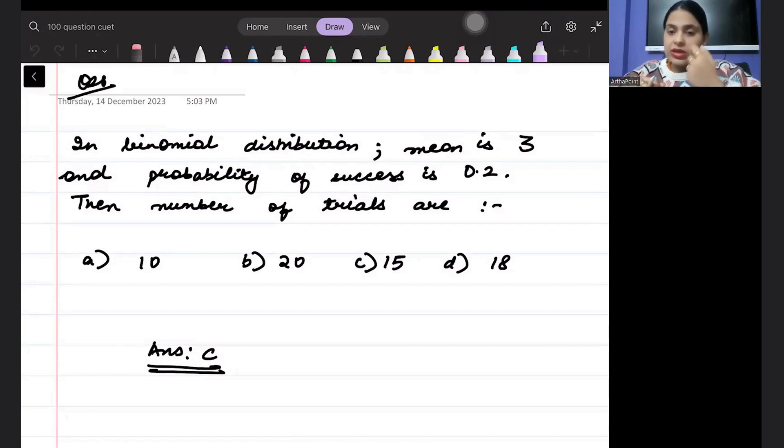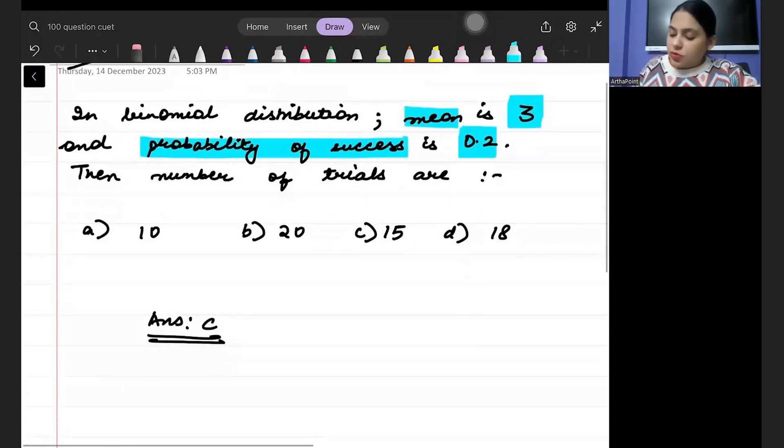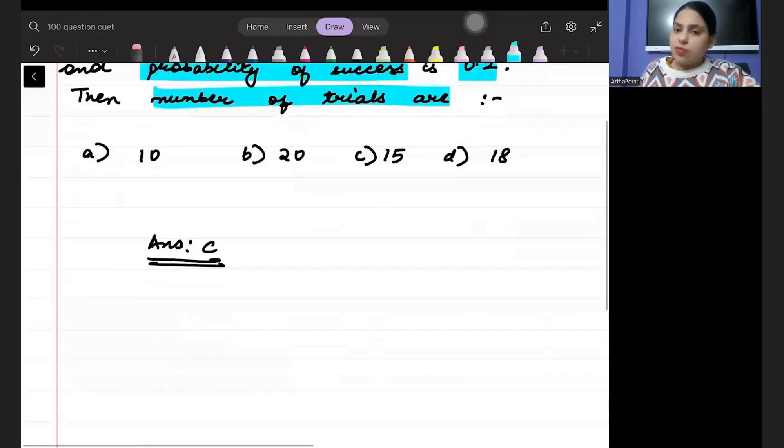And what is this saying? It says that the mean value is 3 and the probability of success is 0.2. Find the number of trials. It's very simple.